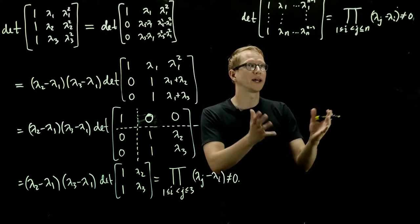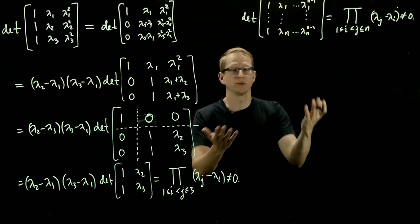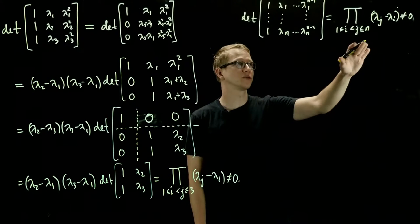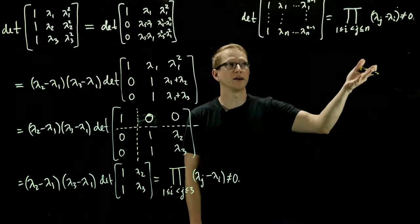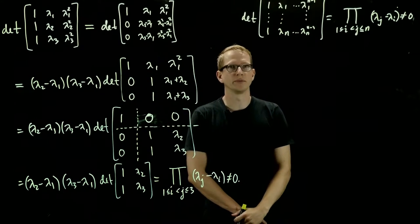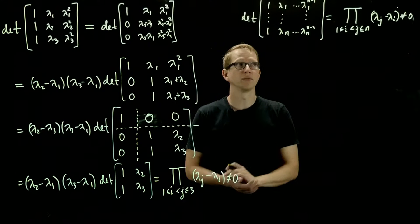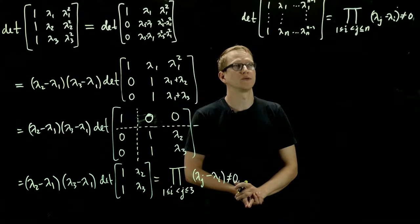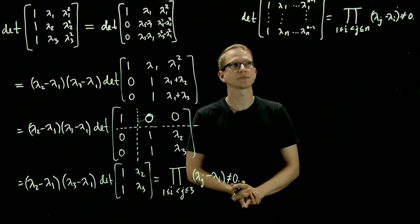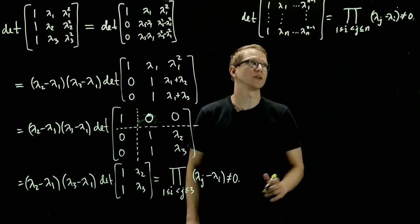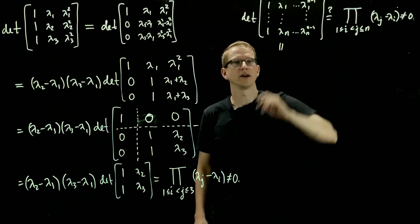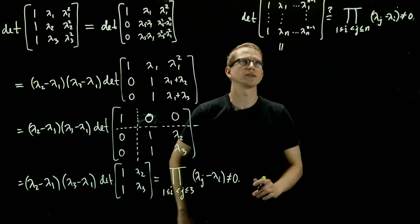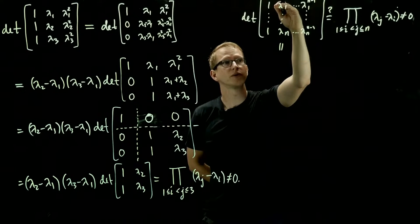And we can prove this by induction. We already know what happens when n equals 1, or when n equals 2, and even n equals 3. So what we can do is, if we assume that this formula is true for n and go to n plus 1, then what we want to do is reduce that problem to this one, show that those numbers factor out, apply our induction hypothesis, and prove that this formula holds more generally. The way we do that is very similar to this — subtracting the first row from all of the rows below it.